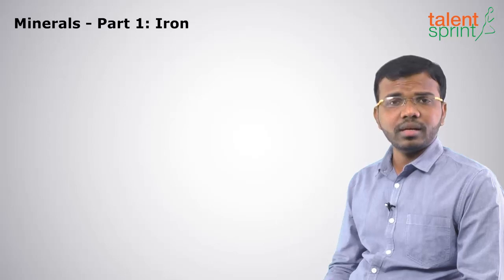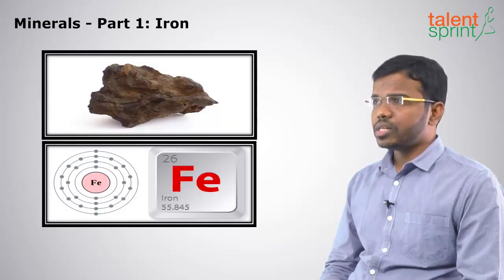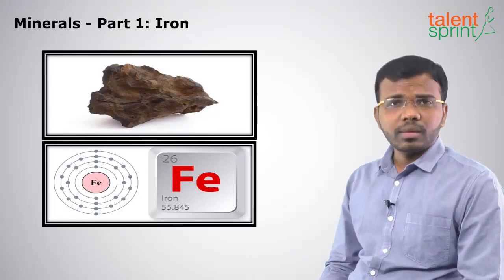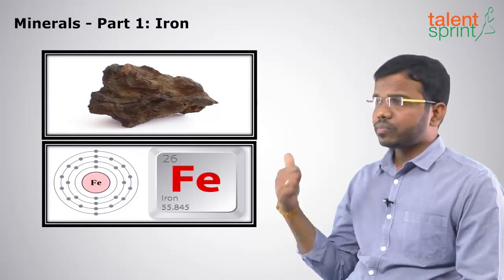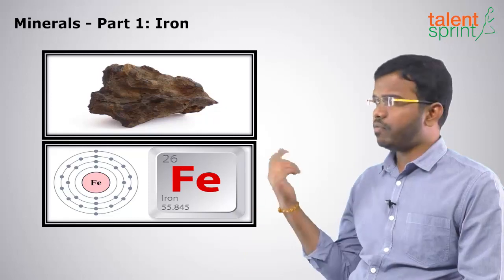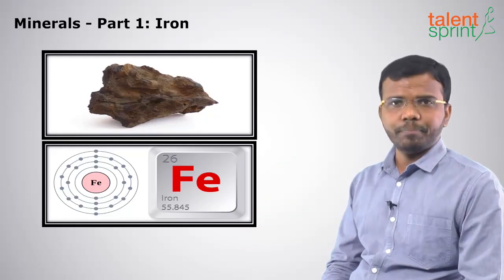In the earlier topics we dealt with the introduction to minerals. Iron is a ferrous metal because it contains iron. It has an atomic number of 26 and its mass number is around 55.8, approximately 56.